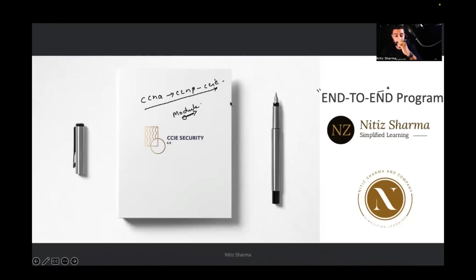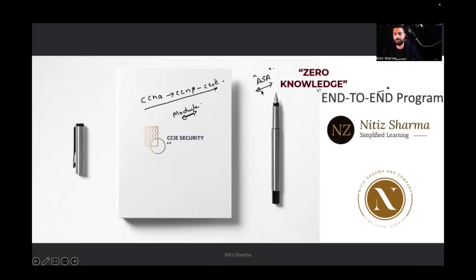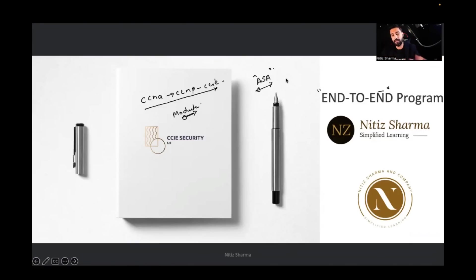In module-based training, I'm going to take a particular product or module — for example, we'll start with ASA from tomorrow onwards. If you have zero knowledge on ASA, that's completely fine. We're going to start from zero level. No matter if it takes 10, 15, or 20 days, we'll finish that particular module to the expert level, then move to the next. CCNA, CCNP, and CCIE are all included in this program itself.